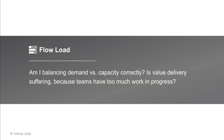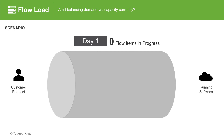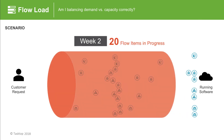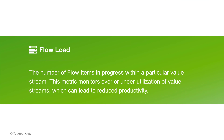And finally, let's learn about flow load. Flow load is a leading indicator. If teams are overloaded and have too much work in progress relative to their capacity, flow time and flow velocity will both suffer. So flow load helps you find the right balance between demand and capacity. For example, on day one of a reporting period you have zero flow items in progress; at end of week one you have 14 flow items in progress; and in week two the load goes up to 20 flow items in progress — based on your team's capacity, that might be too much, causing flow time to be longer and flow velocity to go down. Flow load monitors over- and under-utilization of value streams, which can lead to reduced productivity.